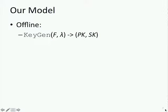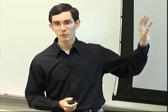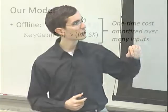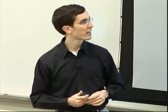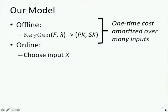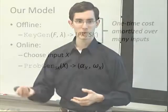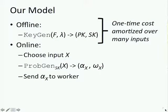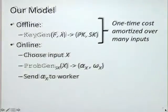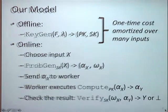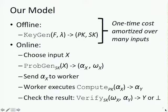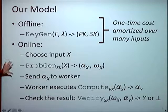One of the changes we made is to introduce an offline phase in which you perform some key generation. You do this one time for a function and then amortize that over many inputs you want to evaluate. In the online phase, you choose some input X, generate a problem instance using your secret key, give a portion to the worker and keep some secret information. The worker executes a compute function using the public key and produces an alleged output. A verification function then tells you the actual answer or that the worker tried to cheat.